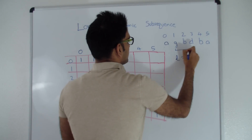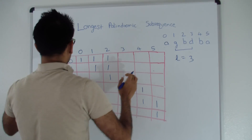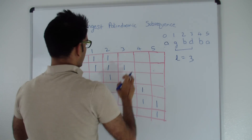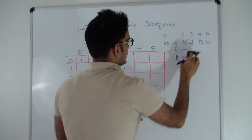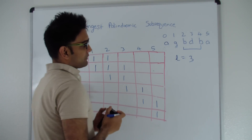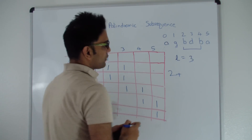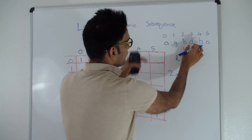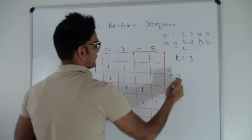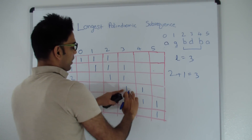For G, B, D — they are not the same at the ends — so cell 1,3 is max of cell 1,2 or cell 2,3, which is 1. For B, D, B — these two end characters are the same! So the longest palindromic subsequence will be 2 (from the two Bs) plus the longest palindromic subsequence between positions 3 and 3, which is 1. So cell 2,4 is 3. For D, B, A — D and A are different — so cell 3,5 is max of cell 3,4 or cell 4,5, which is 1.